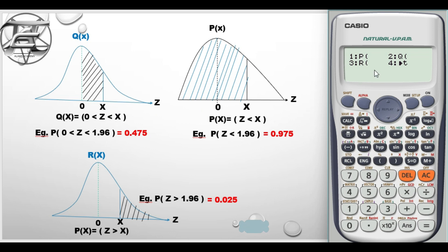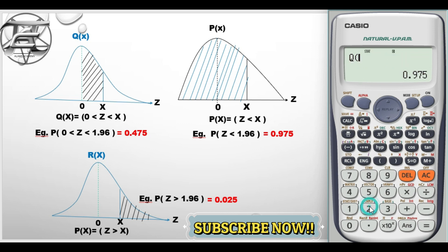So any value of z that is between 0 and x, we are using the second formula which is Q. So I press 2 and then we key in the example here, probability of z lying between 0 and 1.96. So I key in 1.96 and hit the equal sign and our answer here is 0.475.